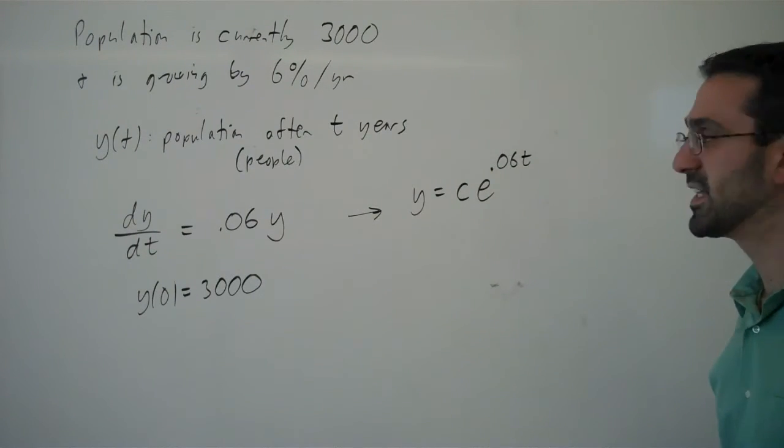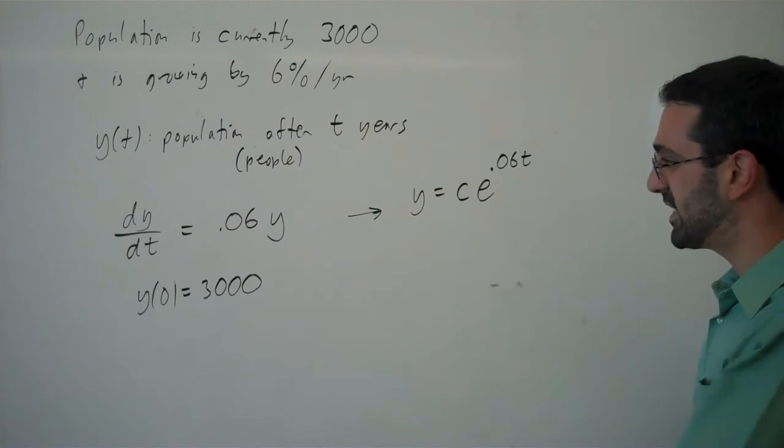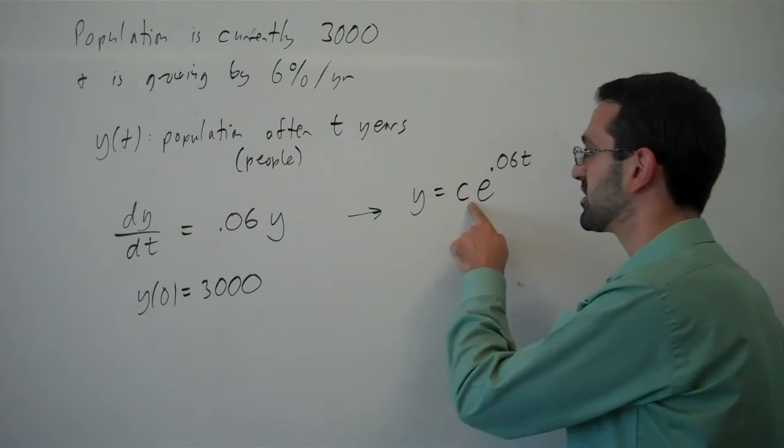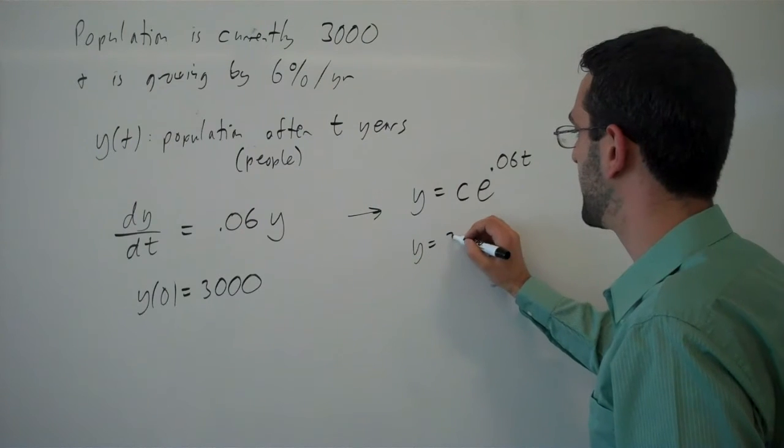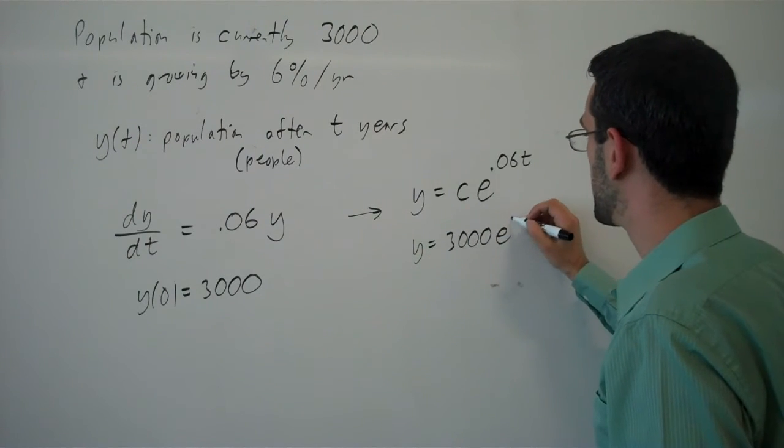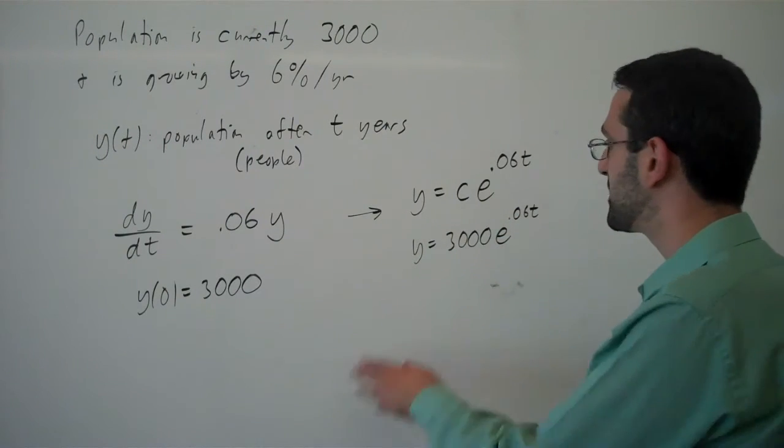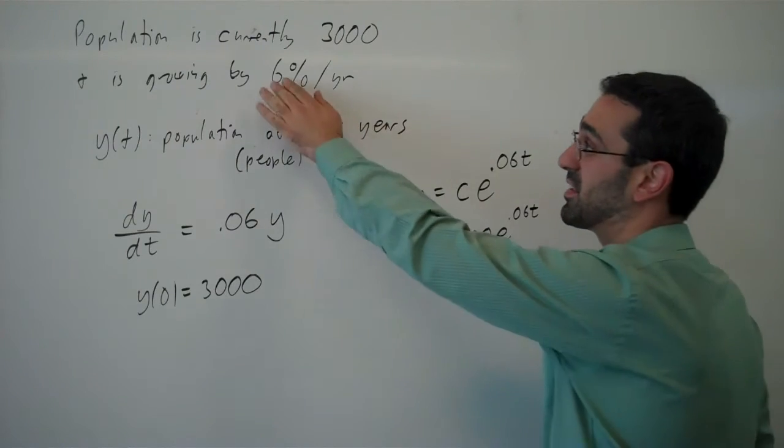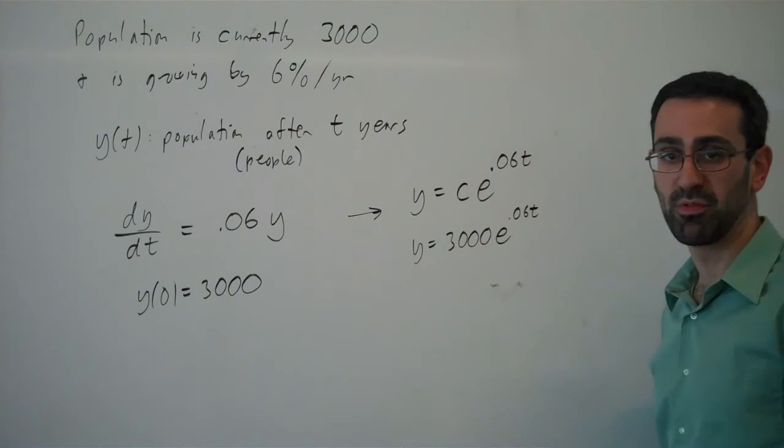We can certainly verify that's a solution. Then we can use our initial condition to solve for c and find that y = 3,000e^(0.06t), which is the same thing we would expect from exponential growth.